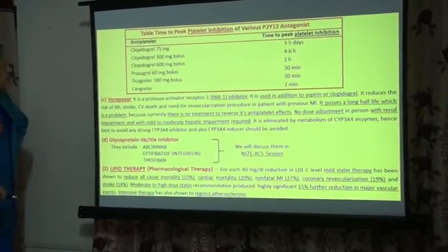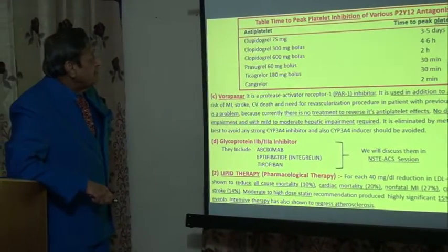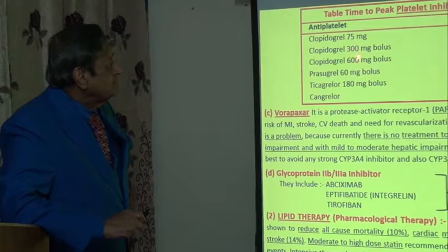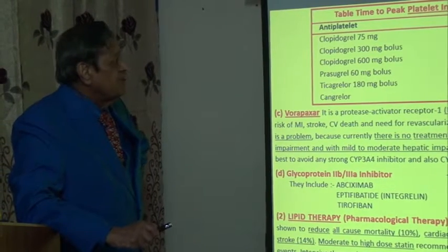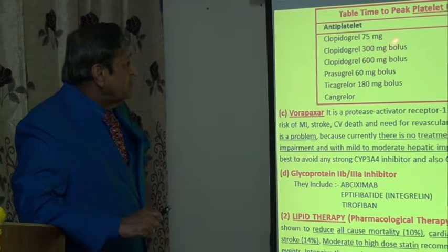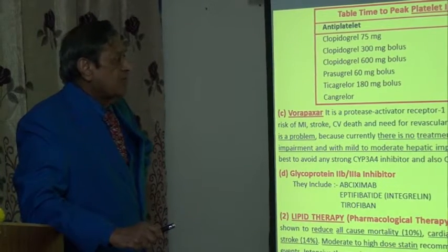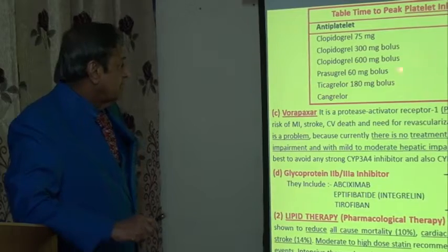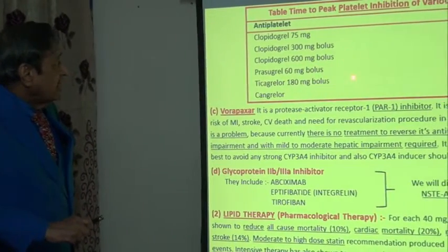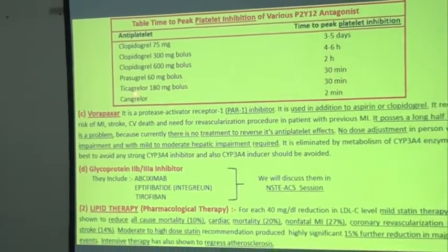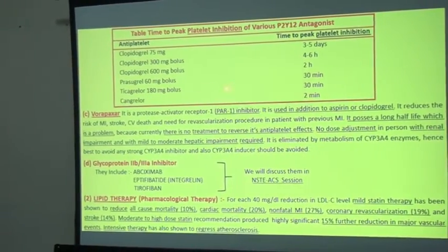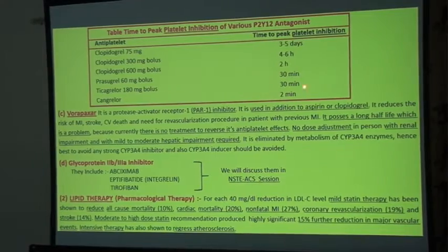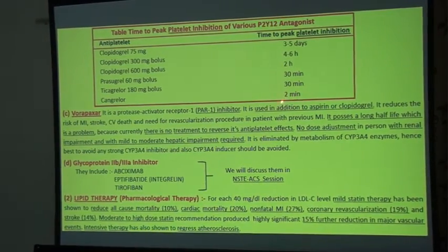Regarding platelet inhibition onset: clopidogrel 75 mg — inhibition starts within 3 to 5 days; clopidogrel 300 mg bolus — 4 to 6 hours; clopidogrel 600 mg bolus — 2 hours. Prasugrel 60 mg bolus — within 30 minutes; ticagrelor 180 mg bolus — within 30 minutes; cangrelor — within 2 minutes.